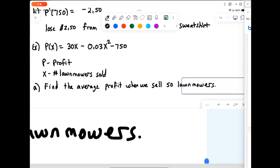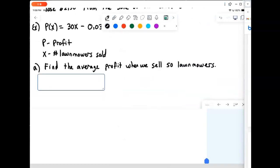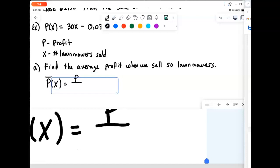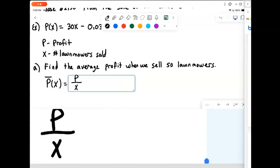First of all, average. An average function is always just taking our function, we actually name it P bar, and it's actually just taking our function, whatever it is, divided by the variable. That gives us our average function, whether it's average profit, average cost, average revenue, and so on.